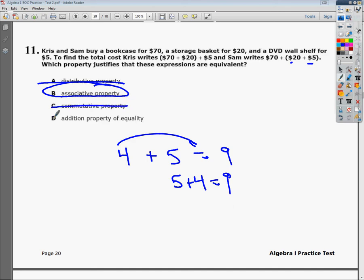And the addition property of equality would only come into place if you see an equal sign. There's no equal sign to this other than if you continued on you could find out that they paid $95 for that stuff. But it has nothing to do with the question. If you don't see an equal sign, it's not addition property of equality.